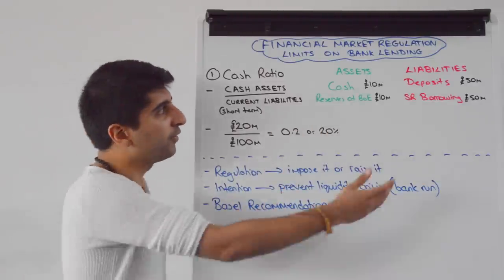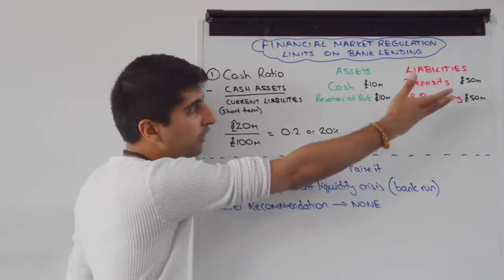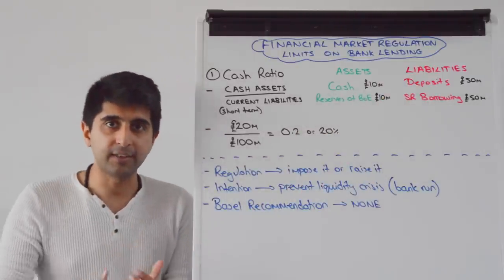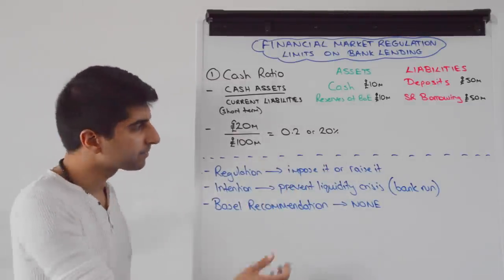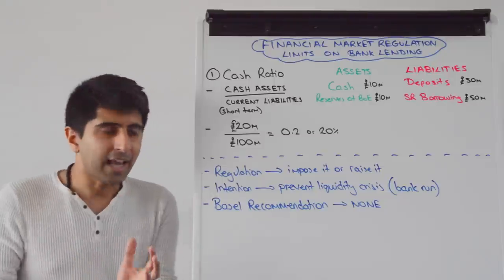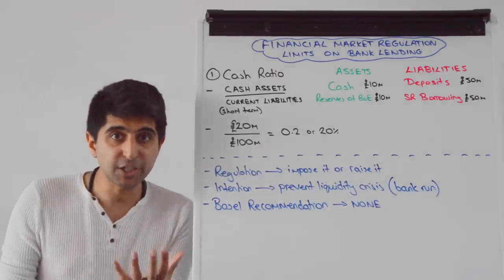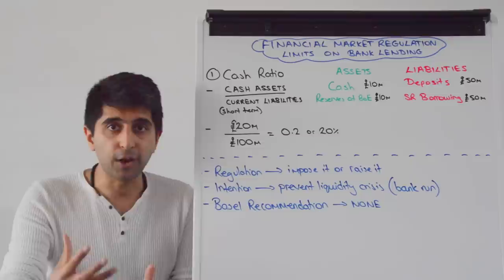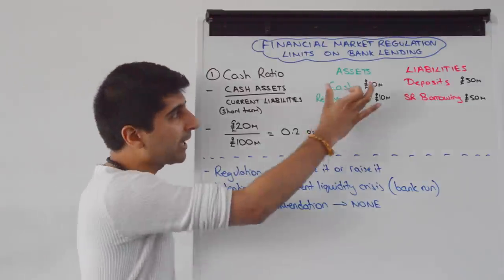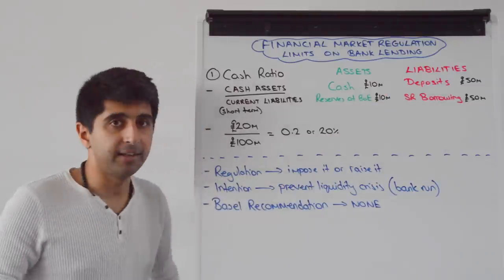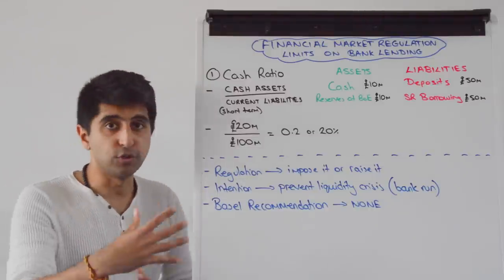What this tells you is that for every pound worth of liabilities that you have to pay, how much cash do you actually have. For every pound of liabilities this commercial bank owes, they have got 20p worth of cash assets to pay that off. The regulation would be to impose a cash ratio if one doesn't exist, or to raise it if it does. The intention is to prevent a liquidity crisis — to make sure a bank will always have enough cash to pay any short-term liabilities it owes, preventing a run on the bank and thus bank failure.